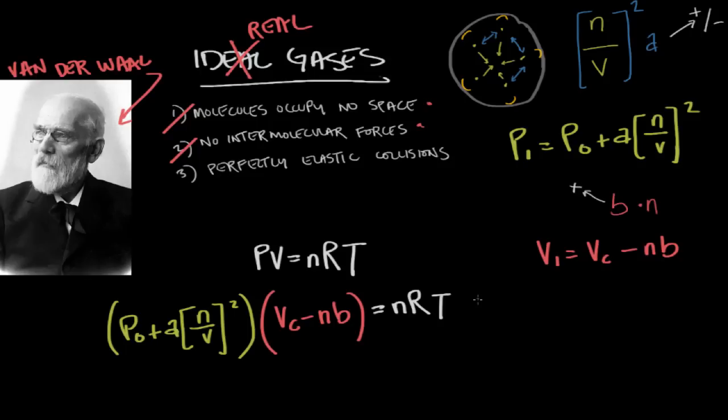So by correcting for the intermolecular forces and the volume that's taken up by the particles, now we have an equation that applies to real gases which we call the van der Waals equation. And it looks pretty terrifying. There are tons of values in here but it's really no big deal because the only difference between this and the ideal gas equation is just the corrected pressure and the corrected volume.